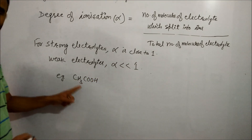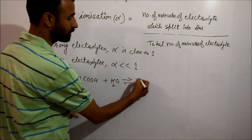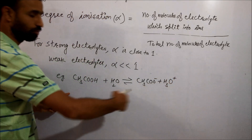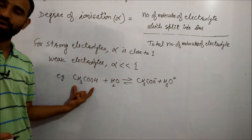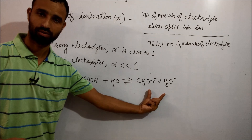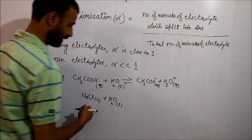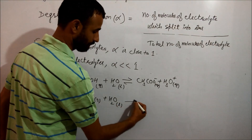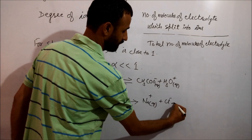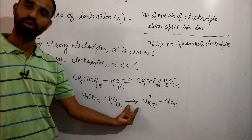For example, acetic acid is a weak acid. When dissolved in water, its ionization is represented with a double-headed arrow, showing an equilibrium between unionized molecules and ionized molecules. In contrast, NaCl dissolved in water is expressed by a single arrow, indicating complete dissociation.